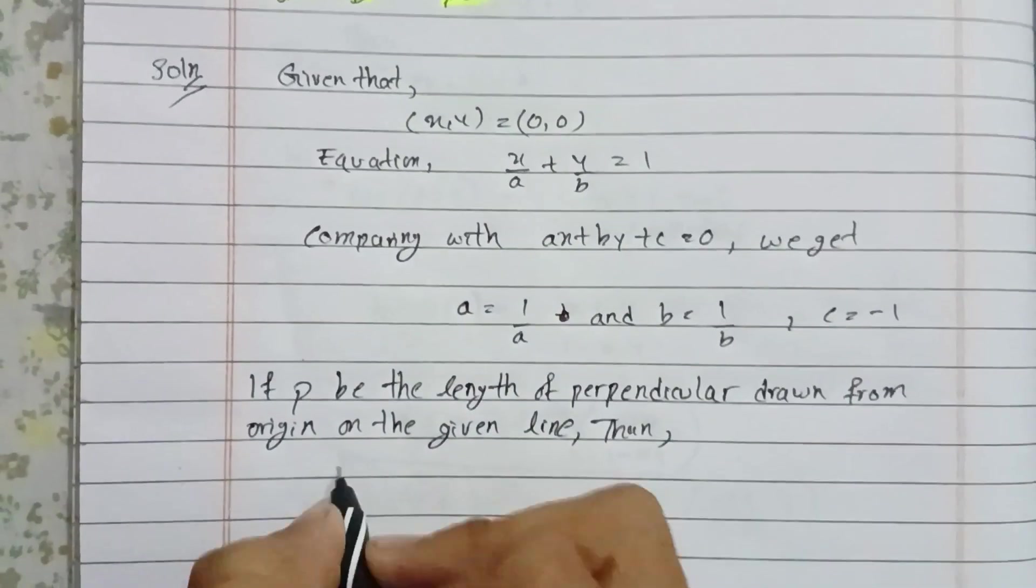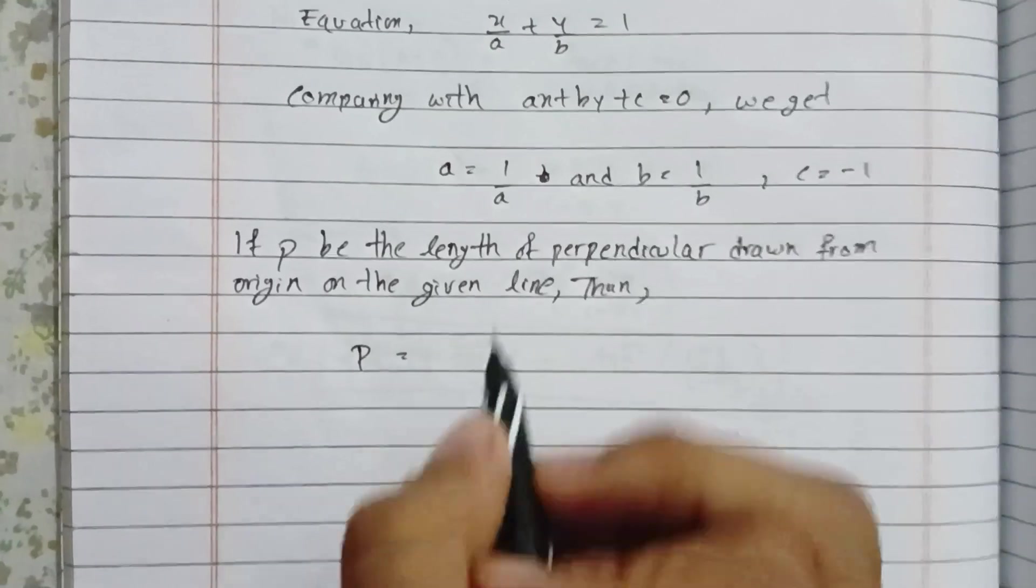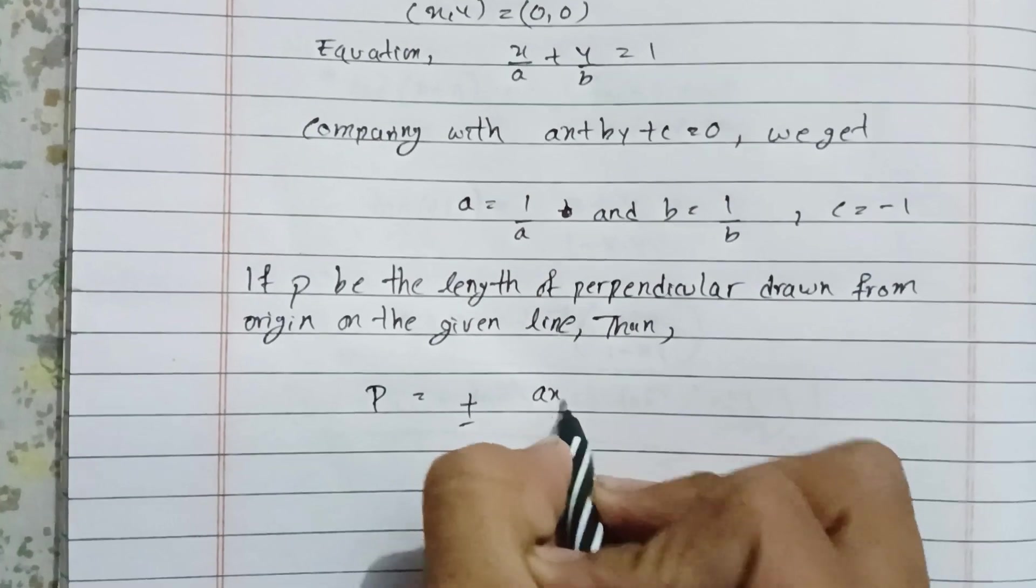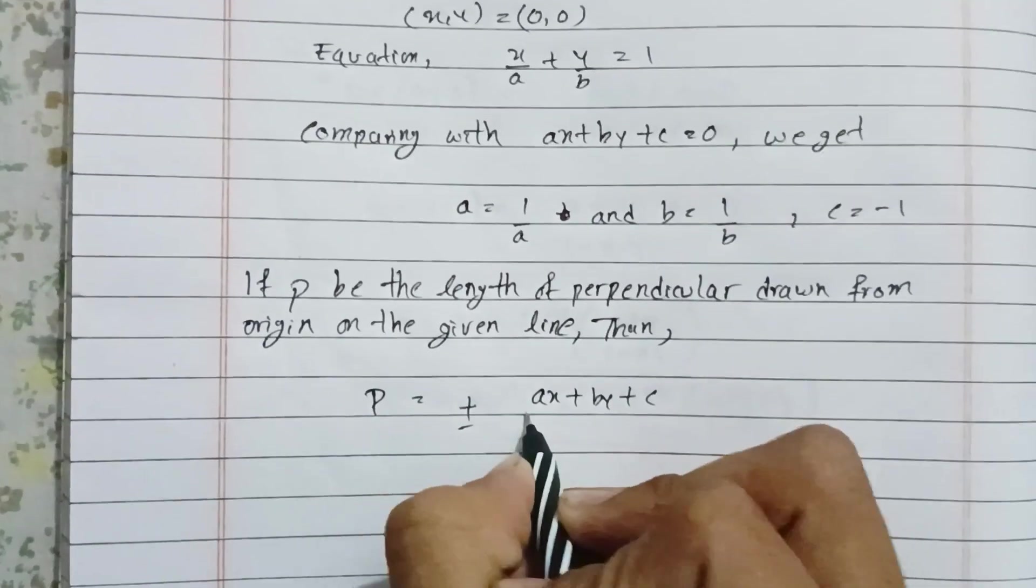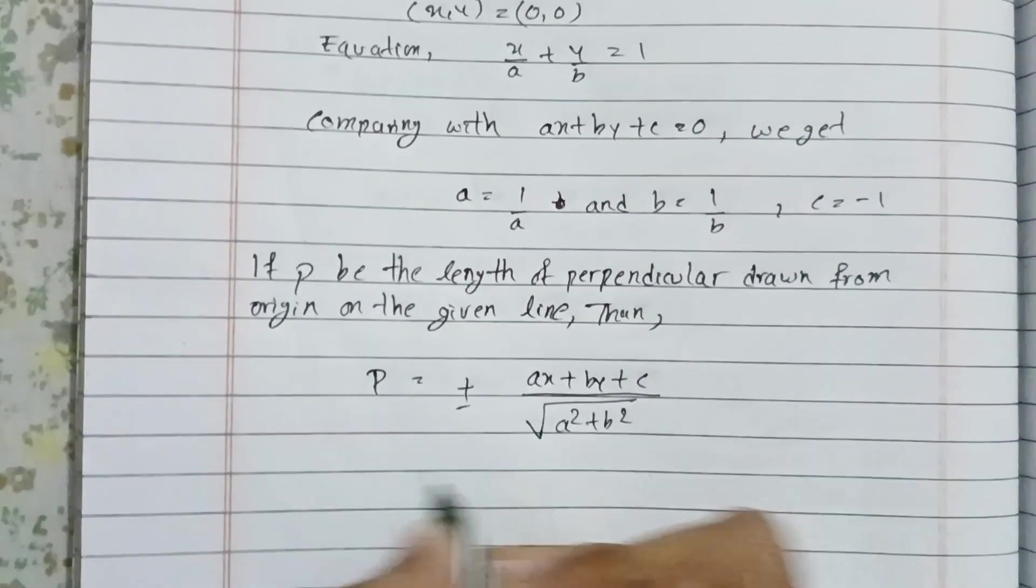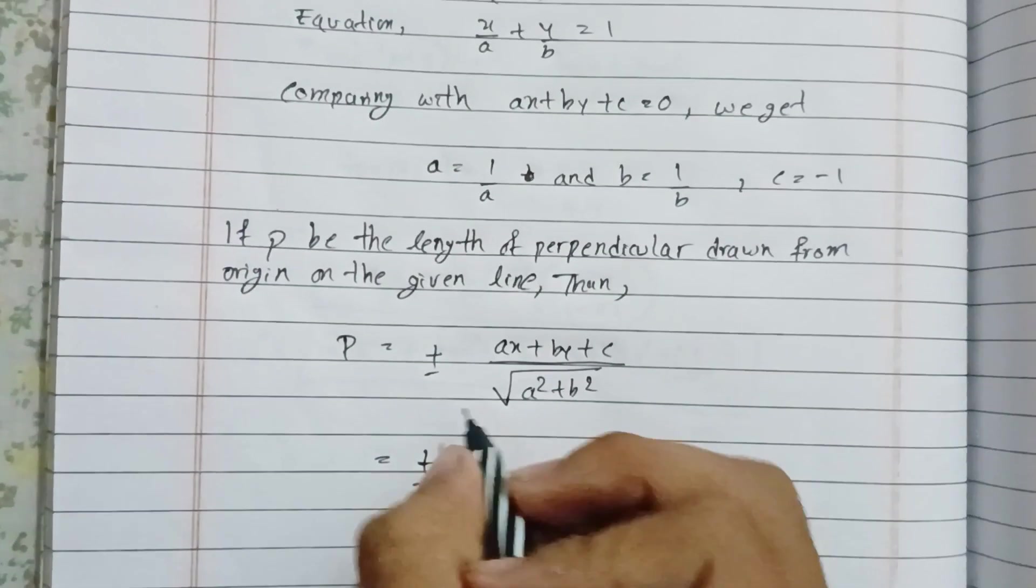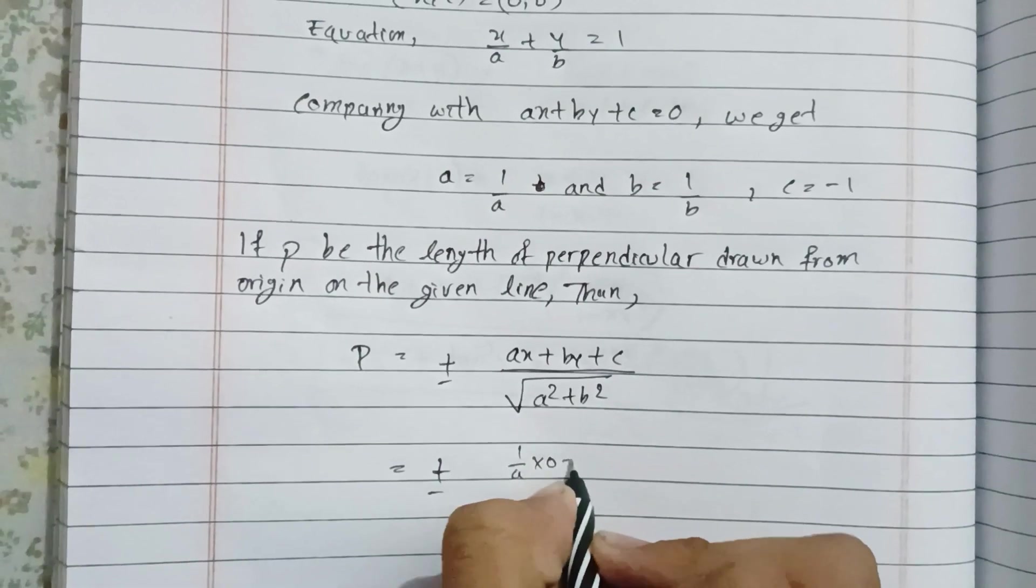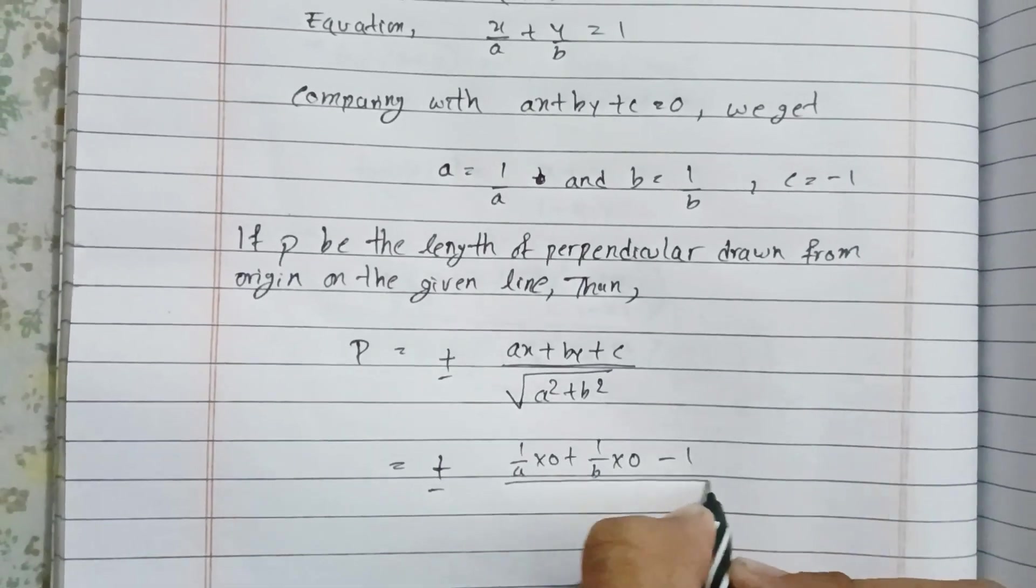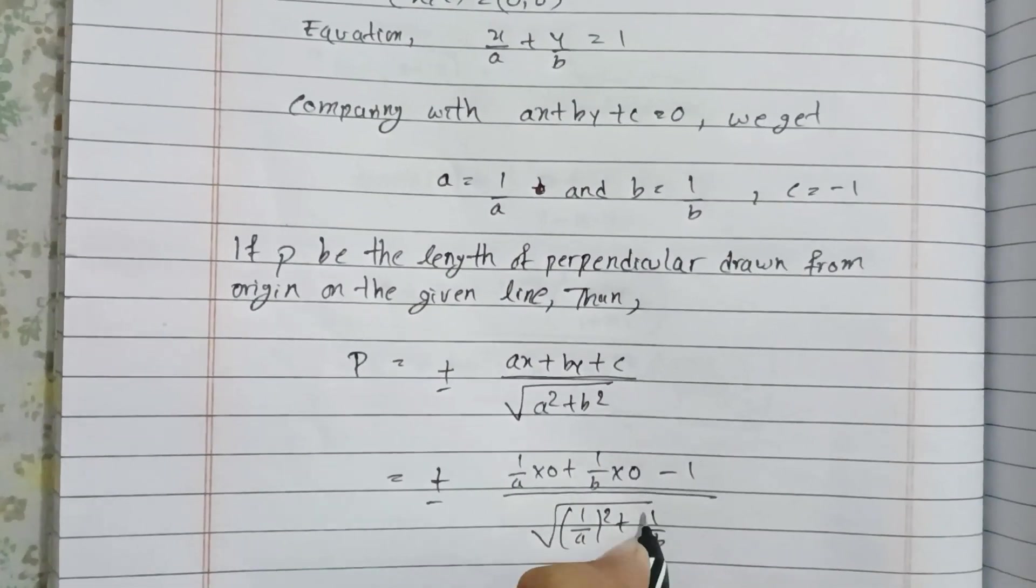p equals plus or minus ax plus by plus c divided by root of a square plus b square. Substituting, p equals plus or minus one by a times zero plus one by b times zero minus one, all over under root one by a square plus one by b square.